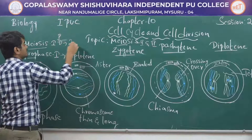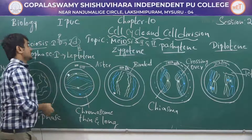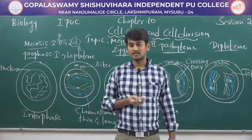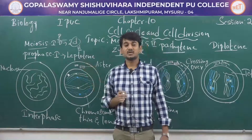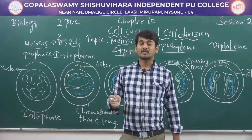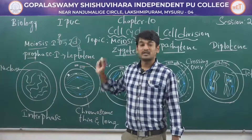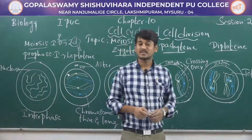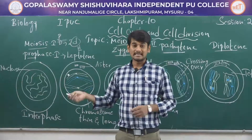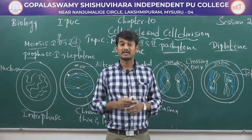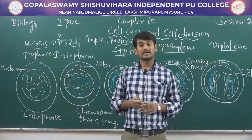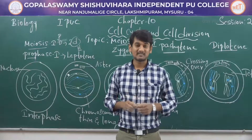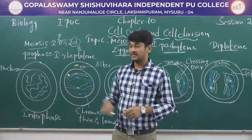Meiosis I is subdivided into prophase I, metaphase I, anaphase I, and telophase I. Based on chromosomal behavior, prophase I is further divided into sub-stages: leptotene, zygotene, pachytene, diplotene, and diakinesis. In these sub-stages we can observe homologous chromosomes pairing — that is called synapsis. We can also observe the synaptonemal complex and chiasmata, and crossing over takes place between two chromosomes, which means exchange of genetic material.